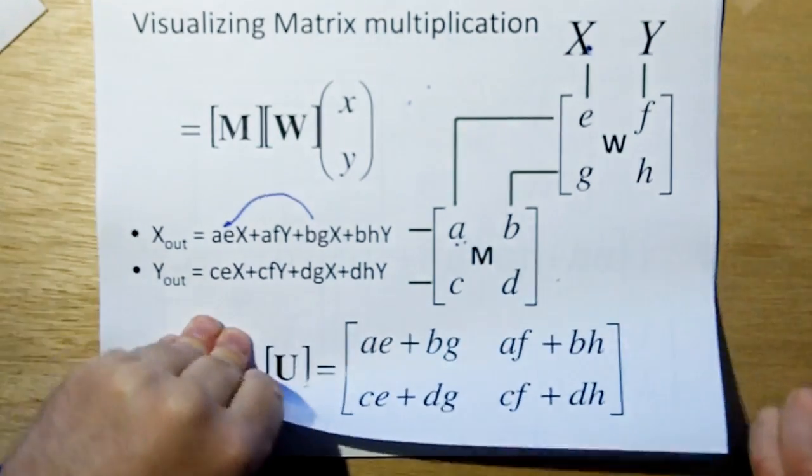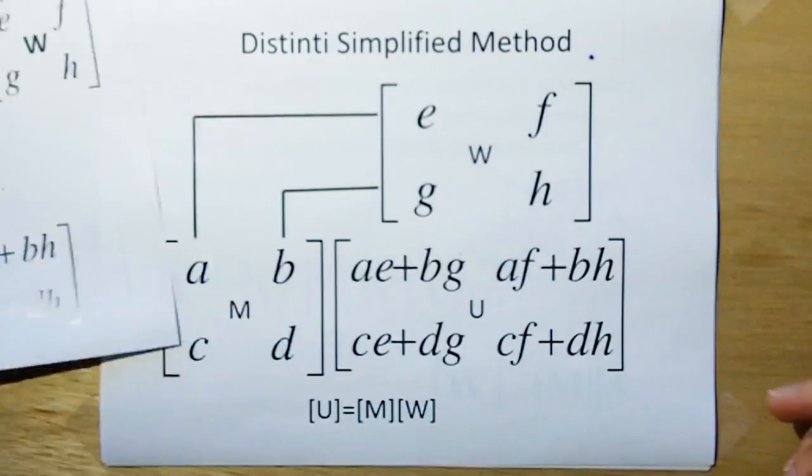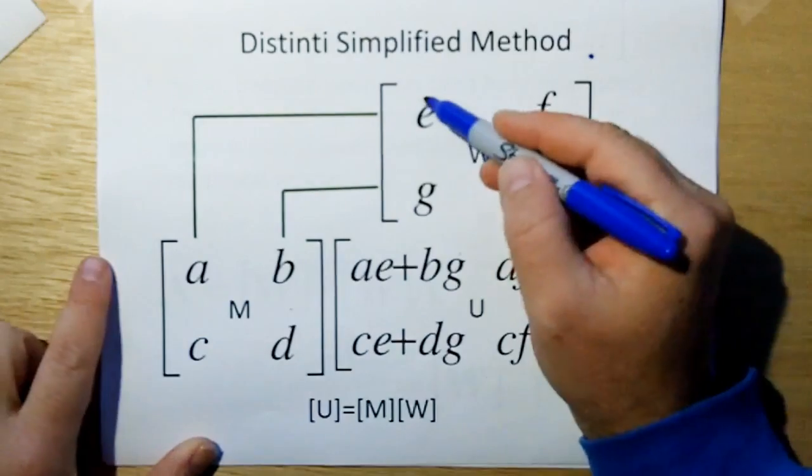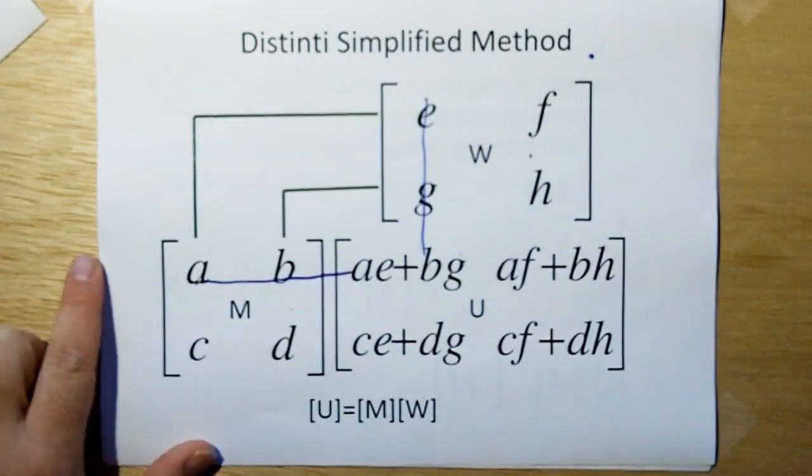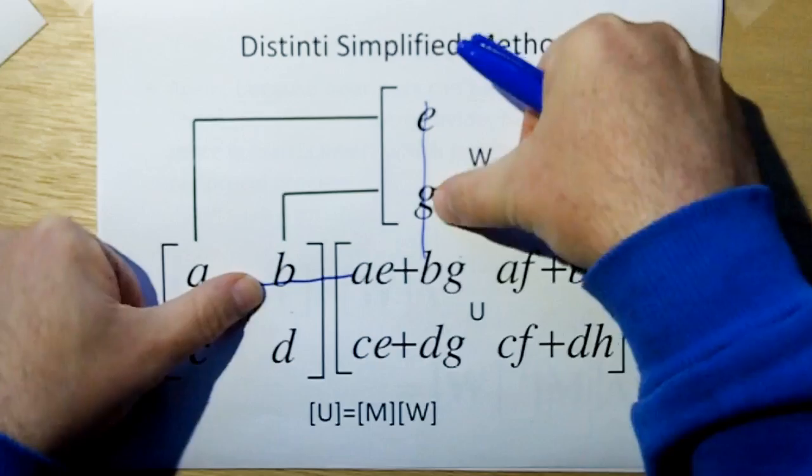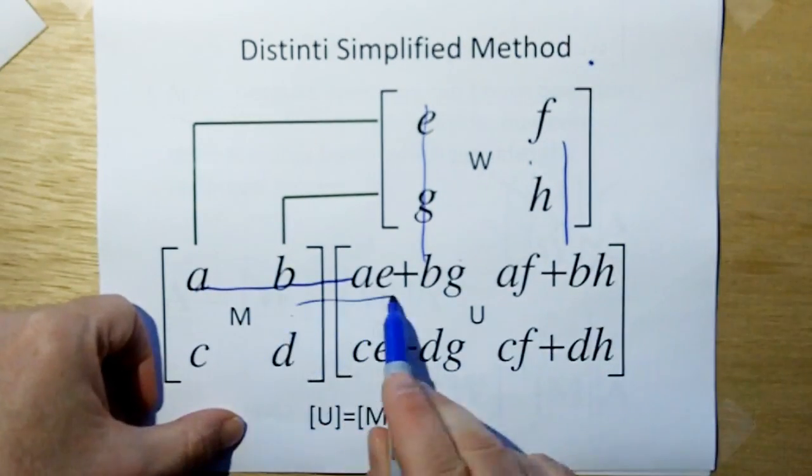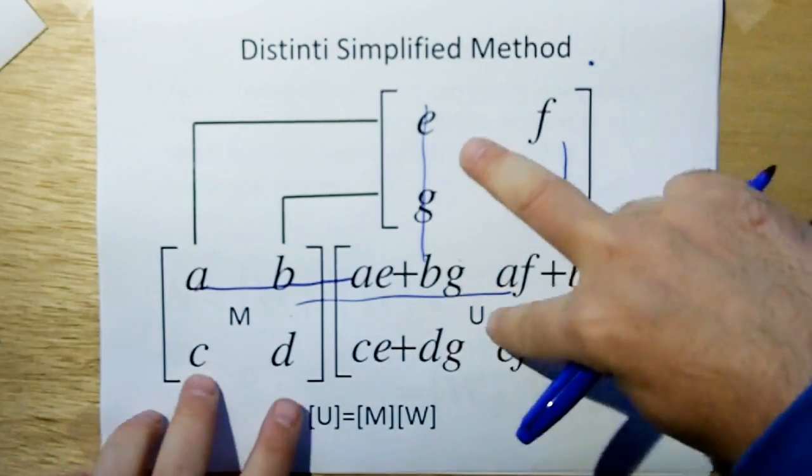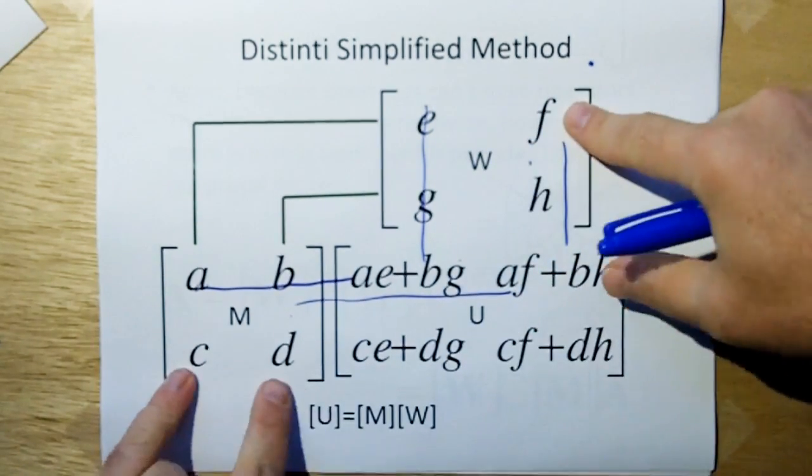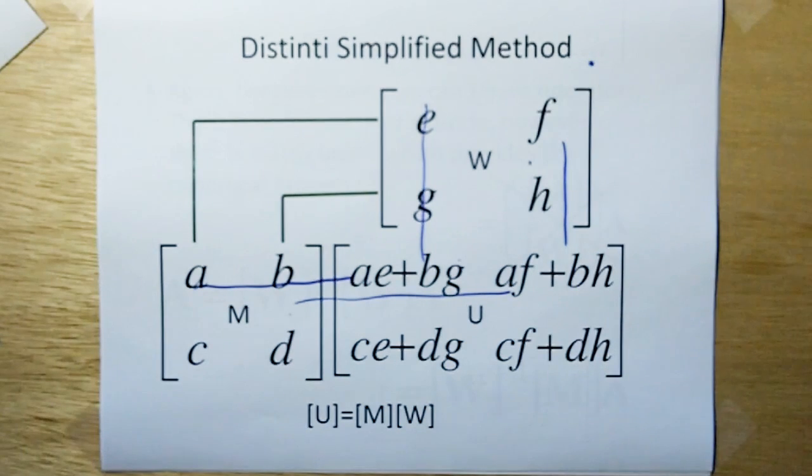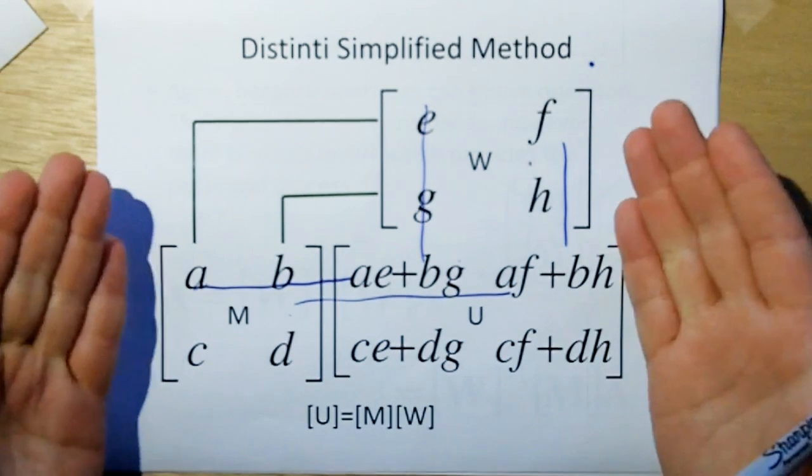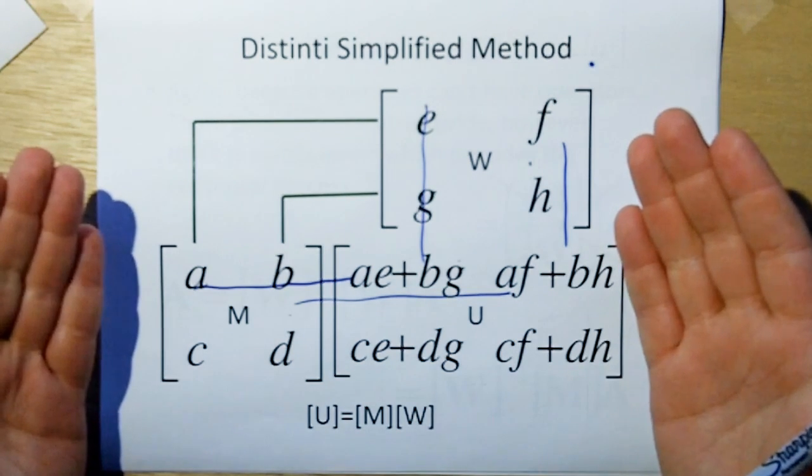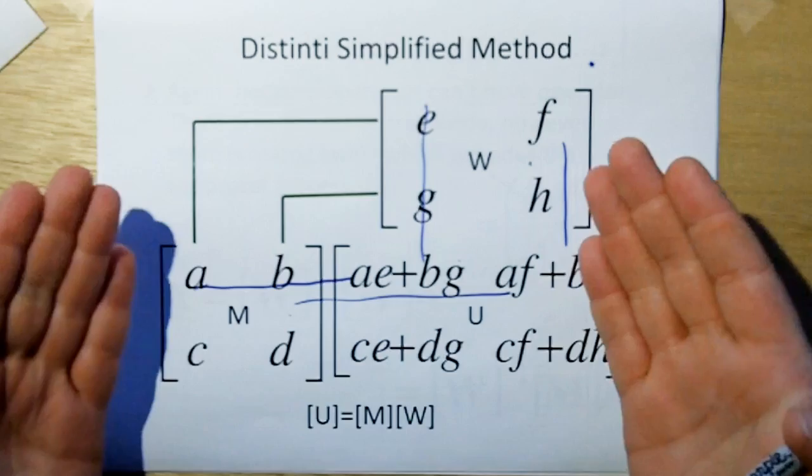Let me show you the Distinti simplified method, because this looks a little bit confusing. If you take this and put it here, and take this one and put it here, and where these two line up, you do AE plus BG. Where these two line up, you say AF, BH, plus BH. And again, this one would be CE, DG, and this one would be CF, DH. And that's the way you can do matrix multiply. A much simpler way to keep track of it, because when you try to do it with the method you learned in college, it's a very convoluted mess. But if you look at it this way, it's actually quite easy.